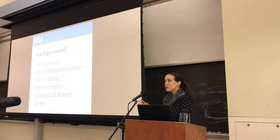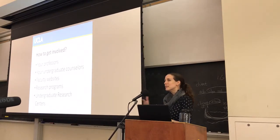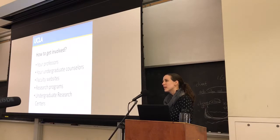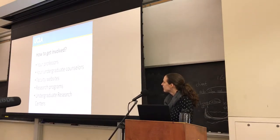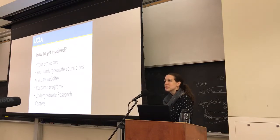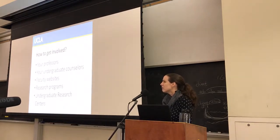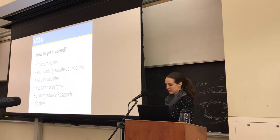Looking at faculty websites is probably the most common way students get involved in research here at UCLA, because they might not have taken a class with the particular professor whose research interests align with theirs. You can also get involved through research programs — most campuses have some form of research programs. And then a lot of campuses have undergraduate research centers. Here at UCLA we actually have two: one for the humanities, arts, and social sciences, and one for the sciences, engineering, and math. We exist to help undergraduates get involved in research.